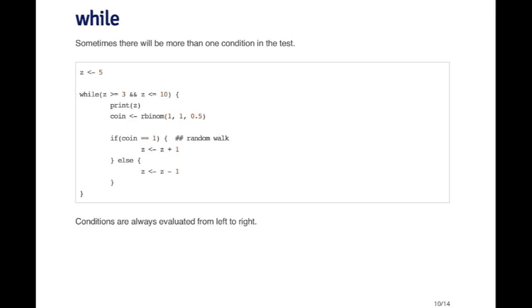So it checks to see that the leftmost condition is true and then it goes to the next condition. So first it'll check to see if z is greater than or equal to 3. If that's true, then it'll go to the next expression. It'll check to see if z is less than or equal to 10. So then there, if those are both true, it goes on into the body of the loop.